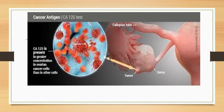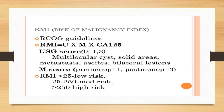CA125 is present in greater concentrations in ovarian tumour cells than in any other cells of the body. The Risk of Malignancy Index (RMI) is calculated according to RCOG Green-top guidelines: RMI = U × M × CA125, where U is ultrasound score, M is menopausal status (1 for premenopausal, 3 for postmenopausal), and CA125 level (normal less than 35 units). RMI less than 25 is low risk, 25 to 250 is moderate risk, and more than 250 is high risk.